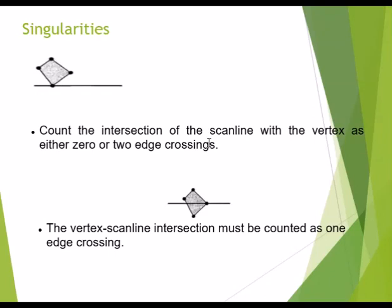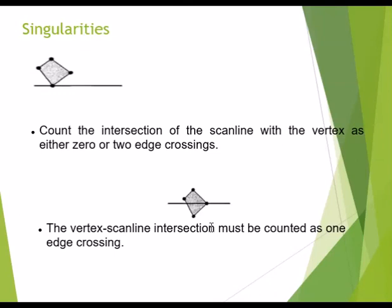The next method in this fill-and-sort strategy is singularities. This is an algorithm where we count the intersections of the scan line with a vertex as either zero or two edge crossings. In certain cases, the vertex-scanline intersection must be counted as one edge crossing. We find all the boundaries of the polygon, and depending on the number of intersections — whether zero, one, or two edge crossings — we fill the points inside the polygon.